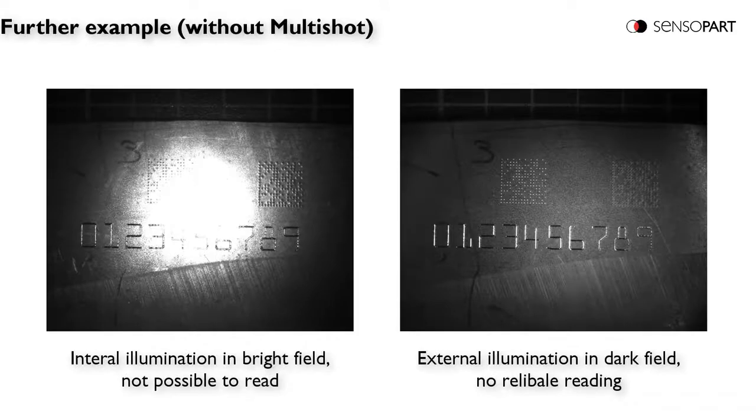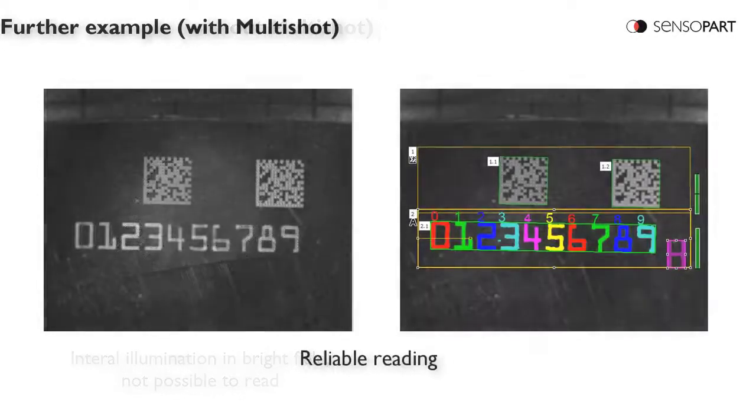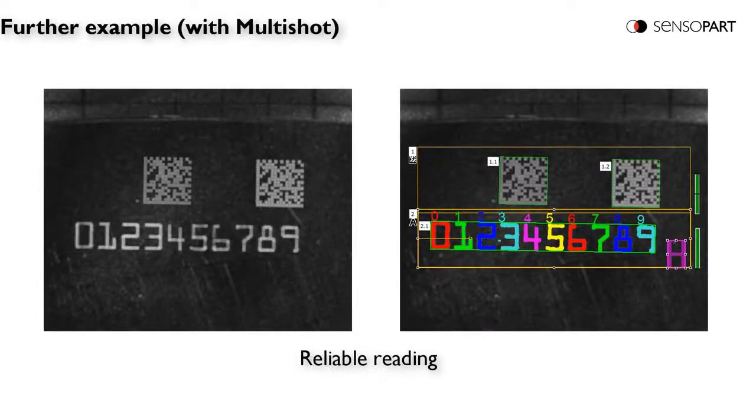Next, we have two ECC200 codes and some OCR text. You can see on the left, bright field. On the right, dark field. Here we have, on the left, multi-shot algorithm, and you can see we're reading the codes and we're reading the OCR.